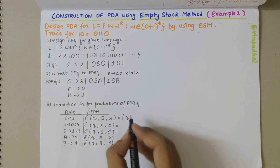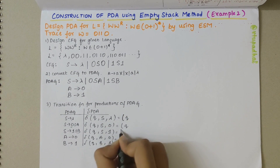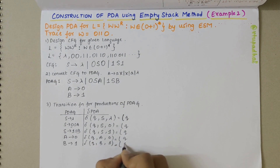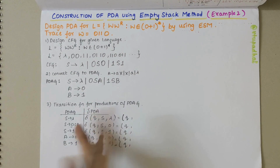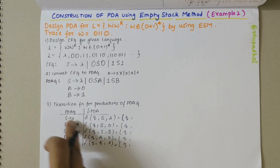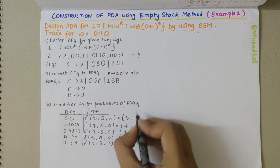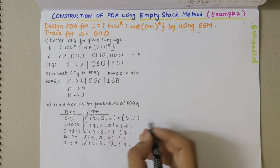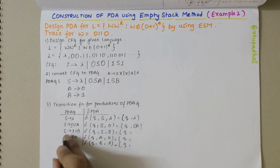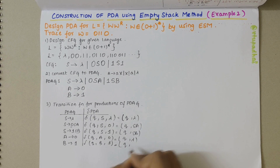In the empty stack method, there is no changing of state — it remains in the same state Q throughout. So I write Q in all transitions. After lambda, there's nothing, so I write lambda. After 0·S·A, I write S·A. After 1·S·B, I write S·B. After A derives 0, there's nothing, so I write lambda. After B derives 1, there's nothing, so I write lambda.